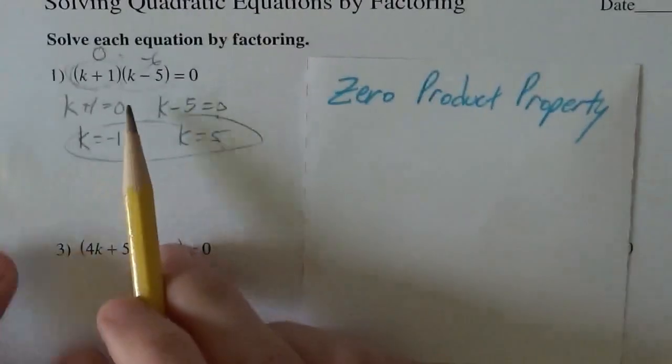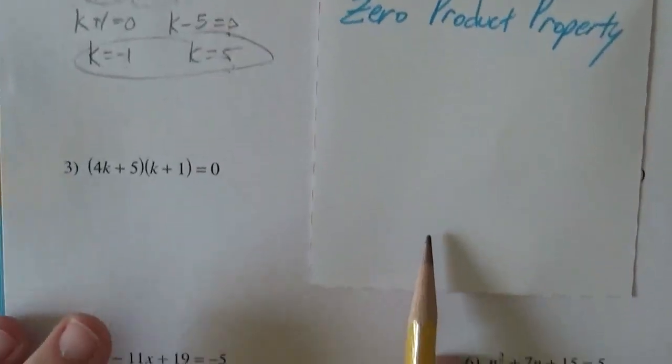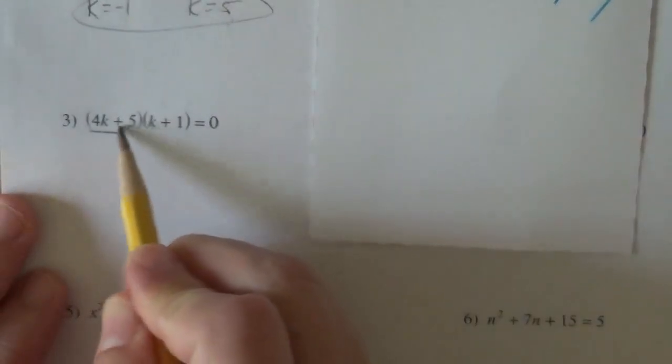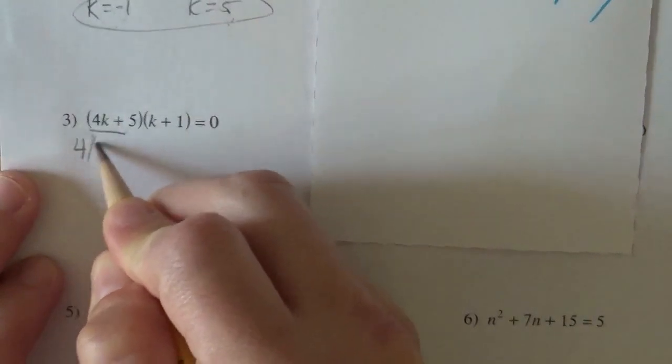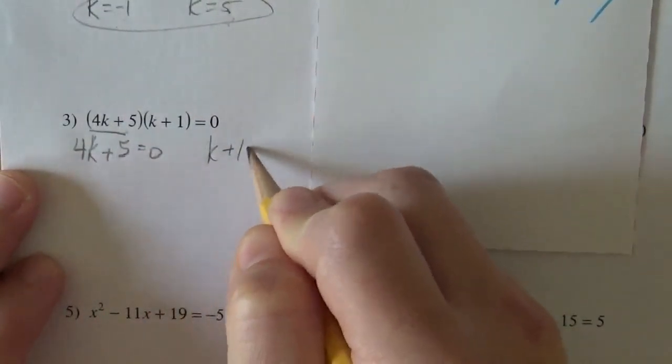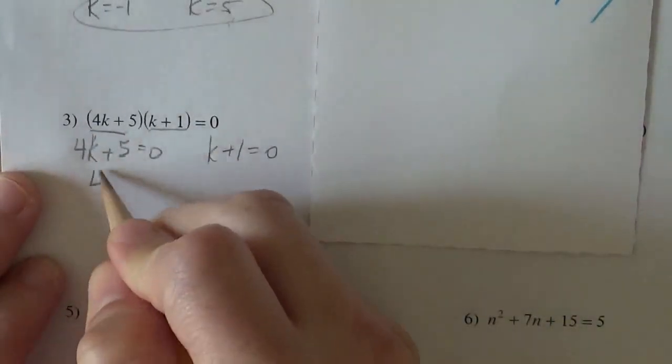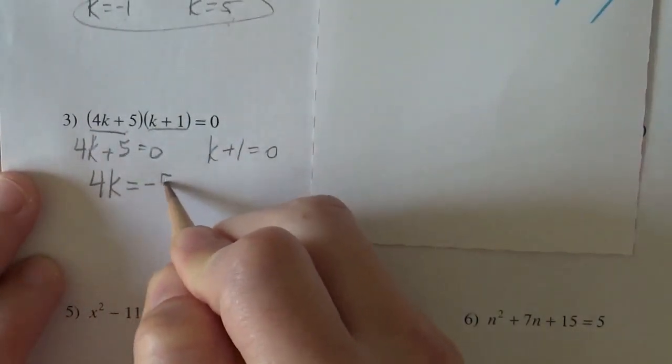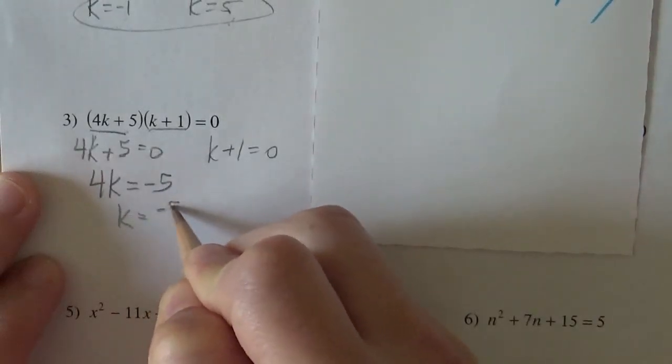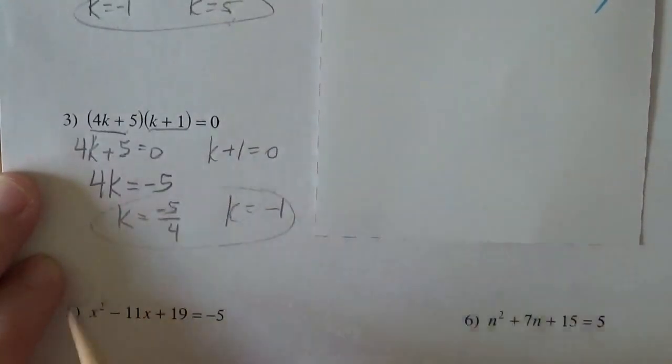Some students remember it just like, oh, the sign switches. But you never want to forget why it's happening. So it's 4k plus five must be zero, or k plus one equals zero. One of these factors has to be zero. So either 4k equals negative five, so k is negative five over four, or k equals negative one. So two possible solutions, either one of those will make that equation true.